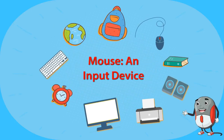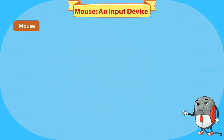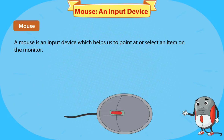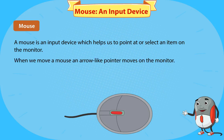A mouse is an input device which helps us to point at or select an item on the monitor. When we move a mouse, an arrow-like pointer moves on the monitor.